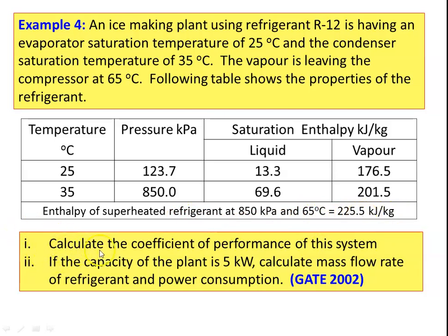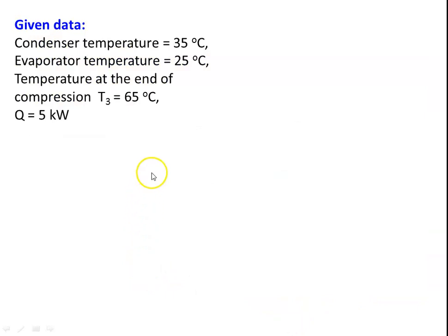Sub-question 1: calculate the coefficient of performance of the system. If the capacity of the plant is 5 kilowatts — that is, refrigeration capacity is 5 kilowatts — calculate the mass flow rate of the refrigerant and power consumption. This is from a GATE question before 2002. So, we write down the given data. Condenser temperature is 25 degrees Celsius. Evaporator temperature is 25 degrees Celsius. Temperature at the end of compression is T3 equal to 65 degrees Celsius. The refrigeration capacity is 5 kilowatts.